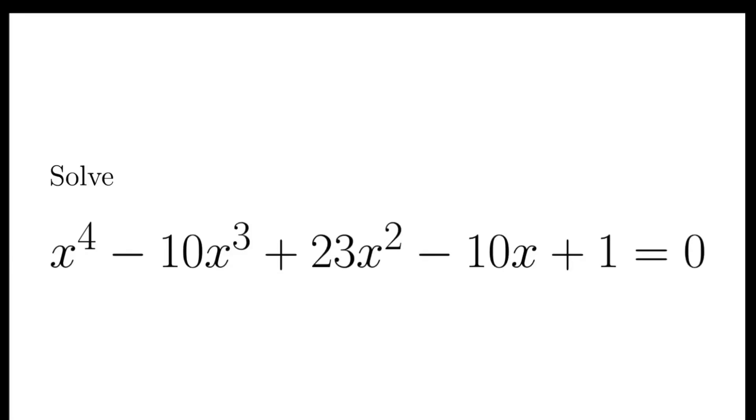In this video, we are going to solve the equation x to the power of 4 minus 10 times x cubed plus 23 times x squared minus 10x plus 1 equals 0.